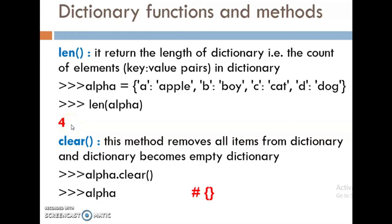The next one, clear function. This method removes all items from the dictionary and the dictionary becomes empty. Alpha.clear — when we are printing this alpha, we can see that the dictionary is null, that is an empty dictionary.